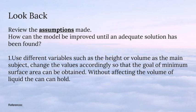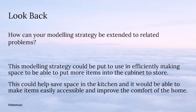I'm Corice. Looking back, let's review the assumptions made. How can the model be improved until an adequate solution has been found? Use different variables such as the height or volume as the main subject, and change the values accordingly so that the goal of minimum surface area can be obtained without affecting the volume of liquid the can holds. This modeling strategy could be extended to efficiently organizing storage space, such as a kitchen cabinet, to make items more accessible and improve home comfort.